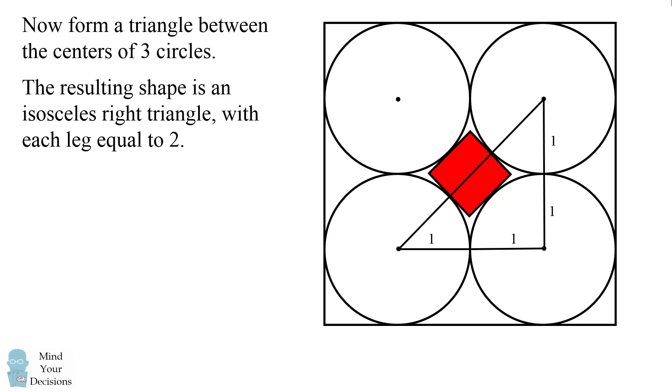But we can also solve for the length of the hypotenuse by considering the distances involved. We have one radius length, then we have the length of the small square which we'll denote by x, and then we have another radius length.